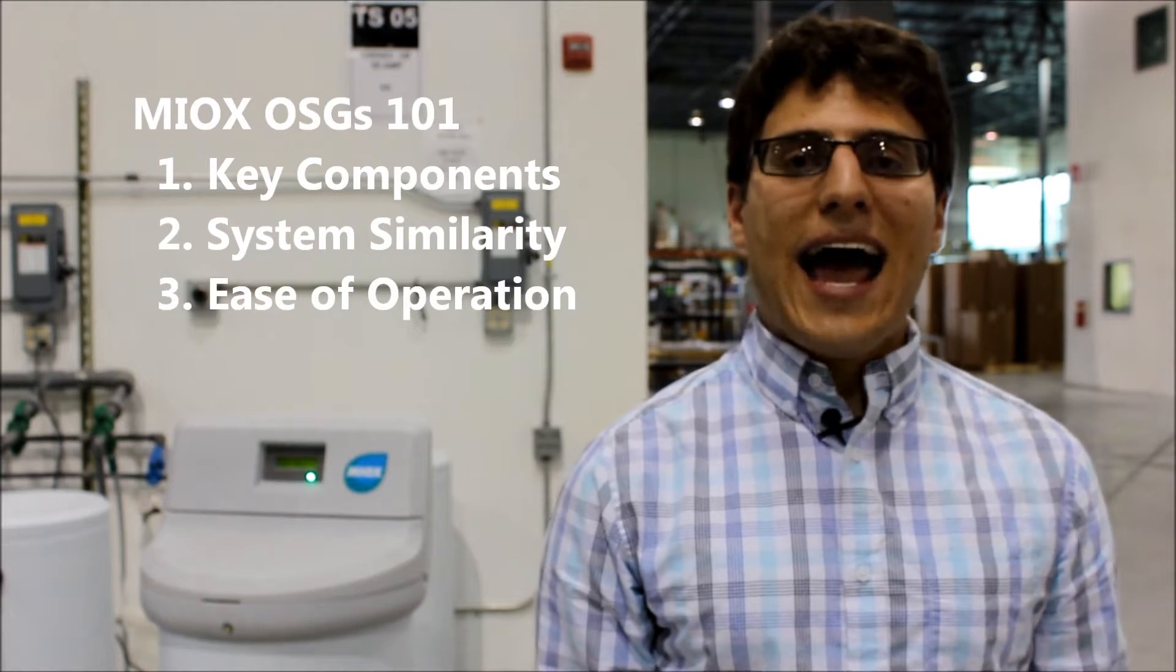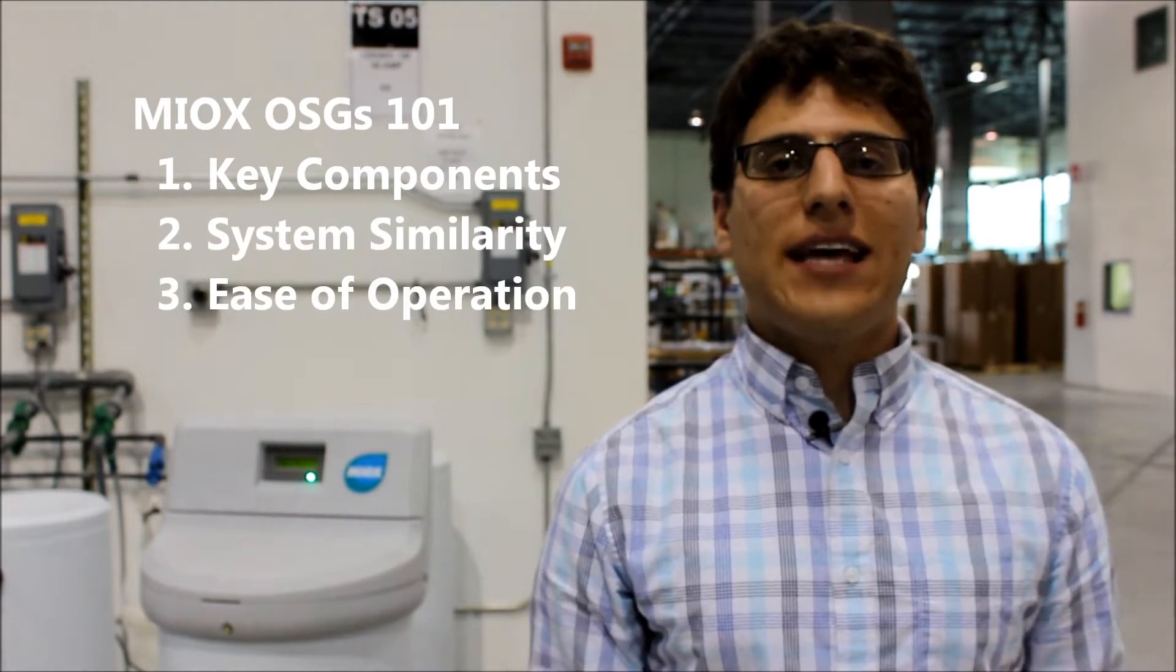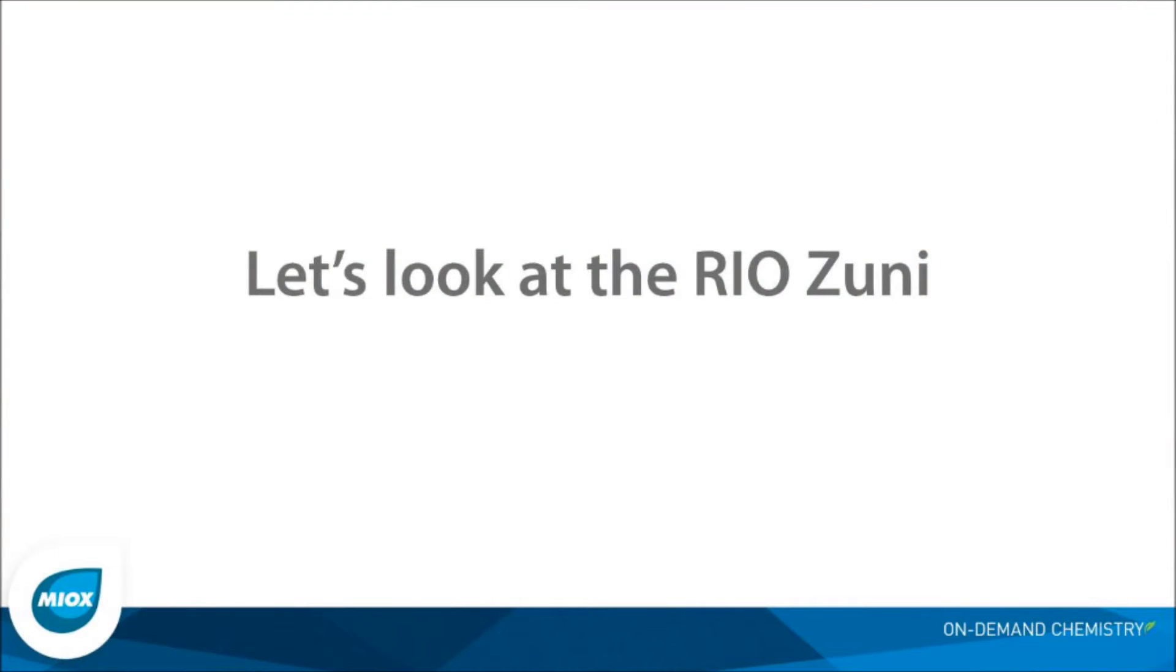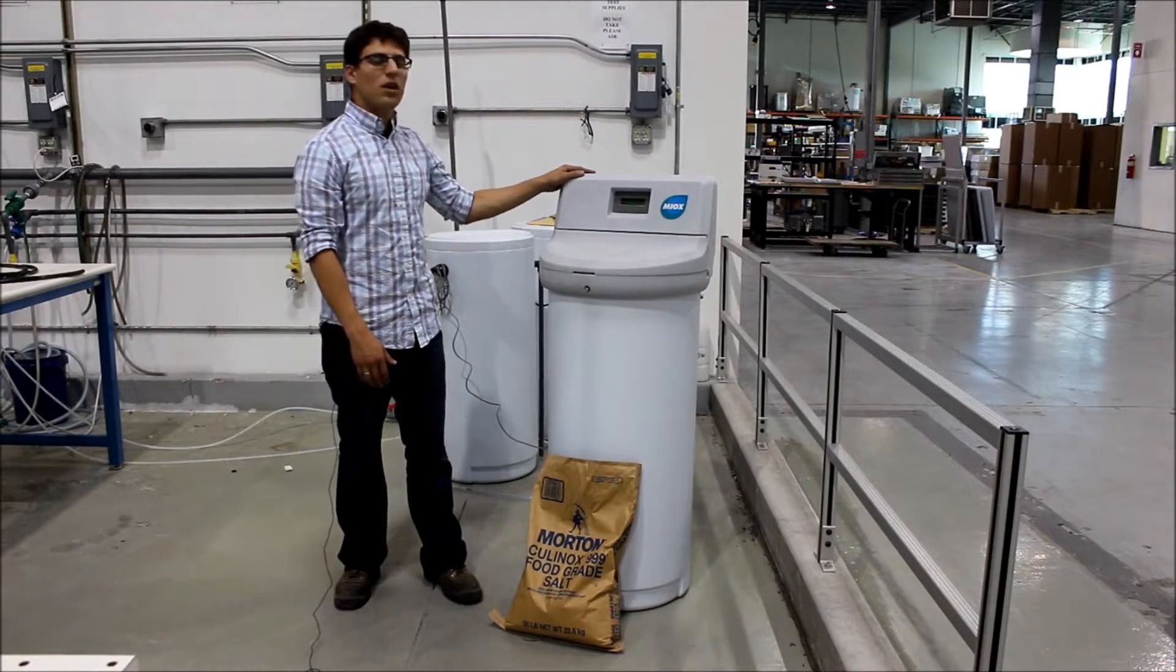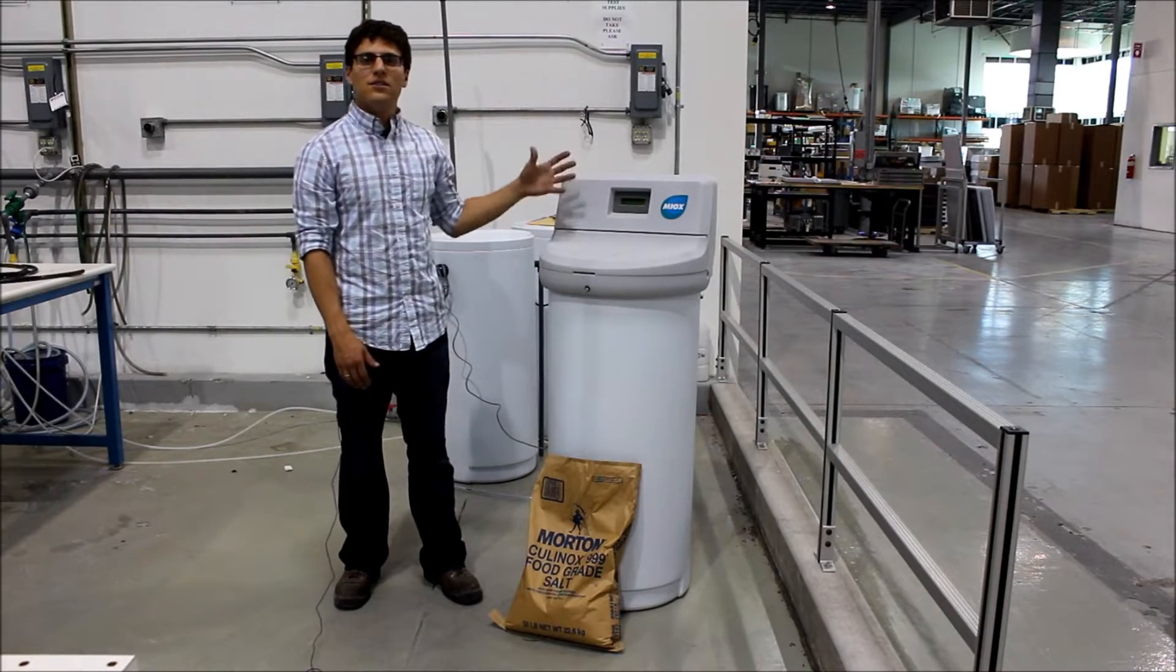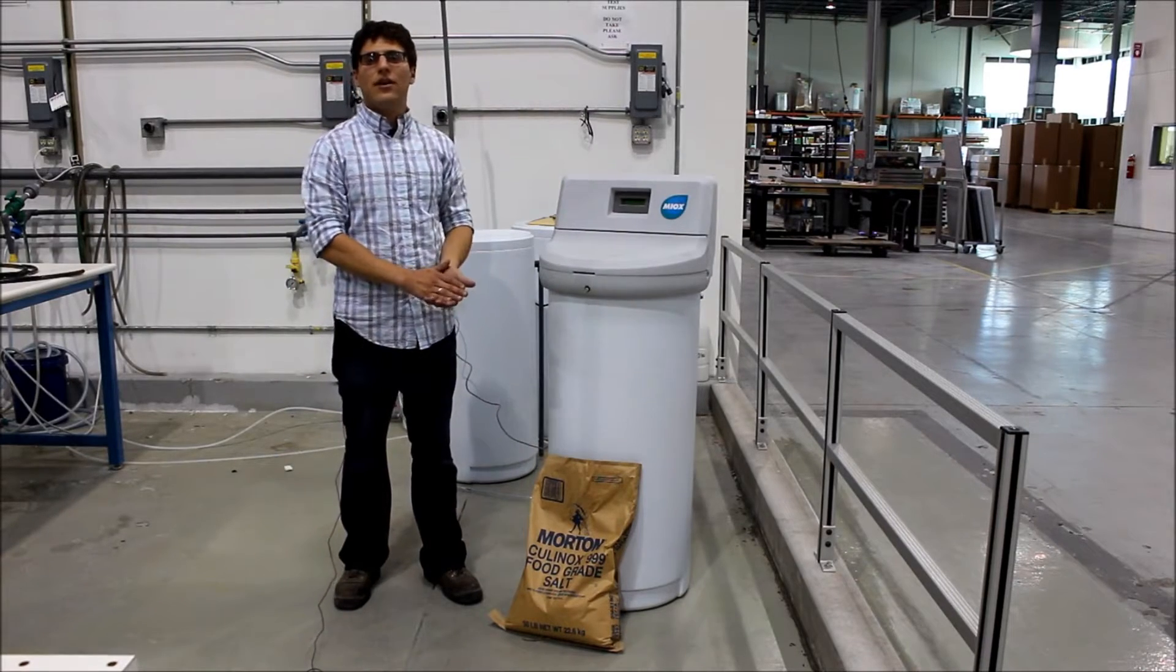We're also going to take a look at adding salt and turning it on to see how easy it is to operate our units. This is a Rio Zuni unit, our smallest one, and we're going to walk through how it works and see all the key elements, and then we're going to look at some other units and see how everything scales.